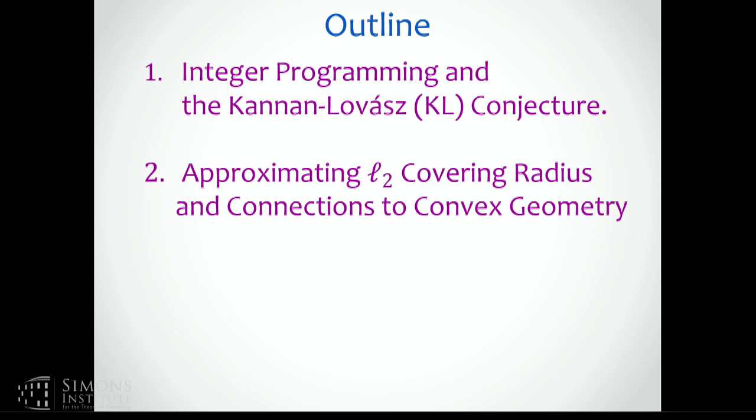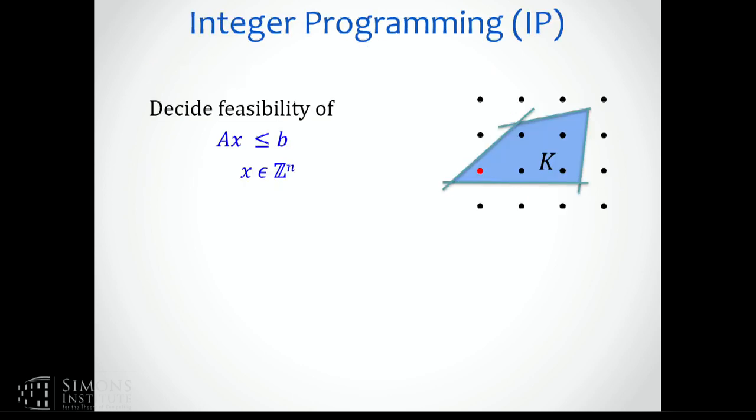I'll connect it to a conjecture of Kannan and Lovász, which would imply faster algorithms for integer programming. Then we will specialize this to the context of the Euclidean norm, and we will see that even there, there are many connections to convex geometry. There will be connections to this reverse Minkowski theorem that Noah and Oded proved.